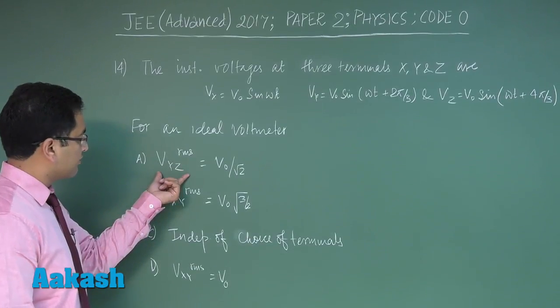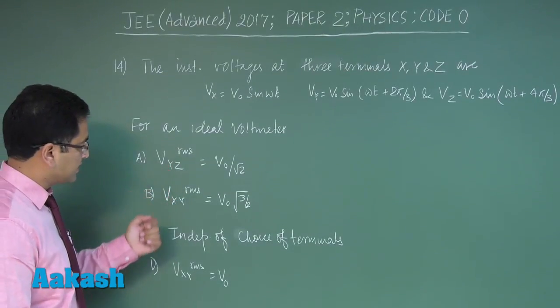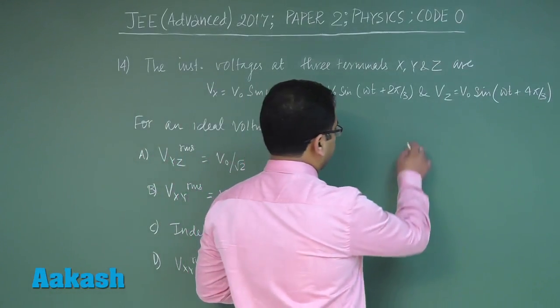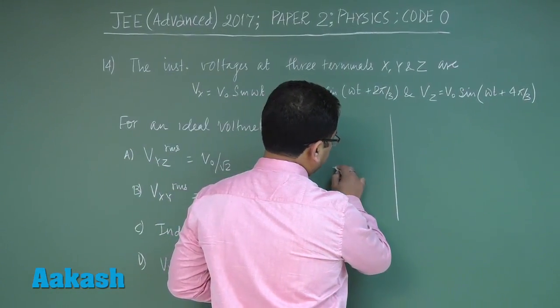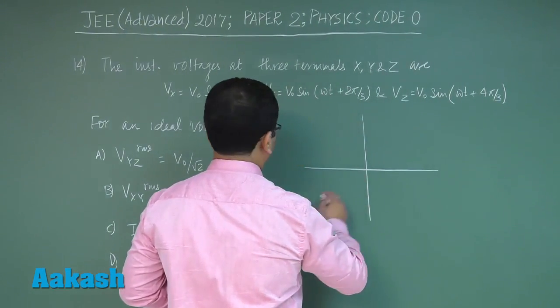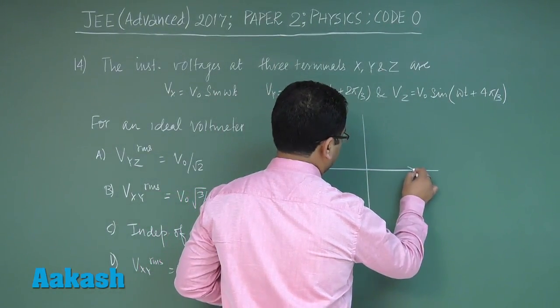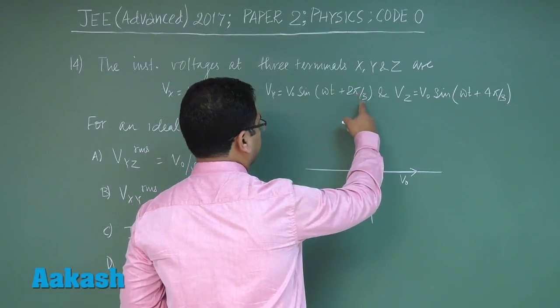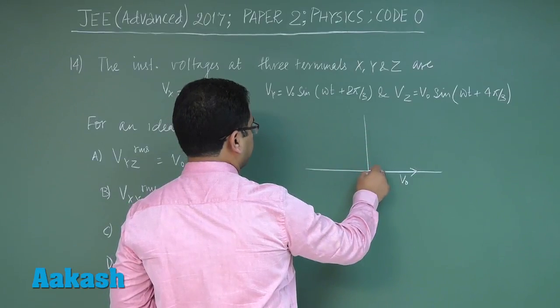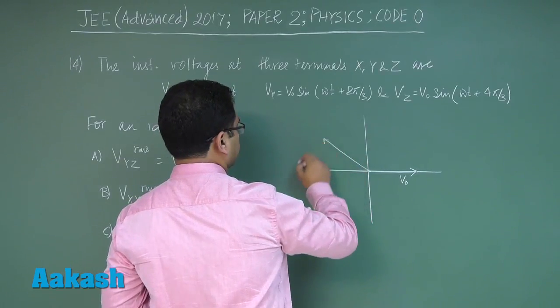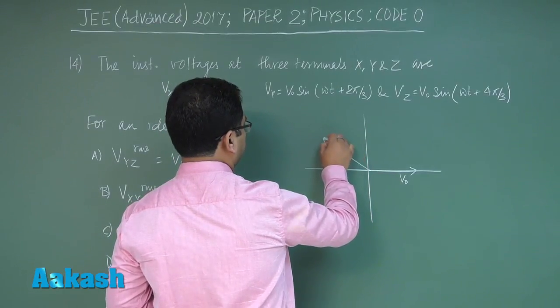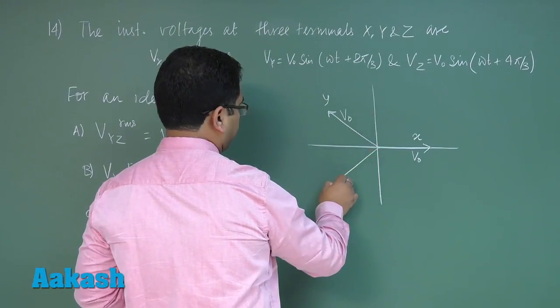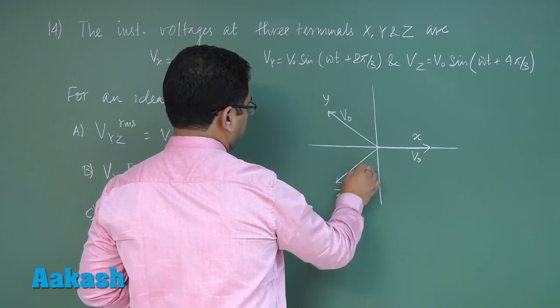The idea is if I draw this in the phasor diagram, VX would be V_naught sine omega t. VY is of course, you can see 120 degrees, so that is VY. This is for Y, this is for X, and Z would come here.